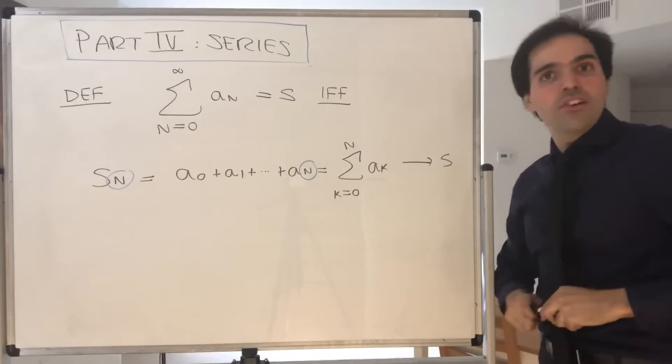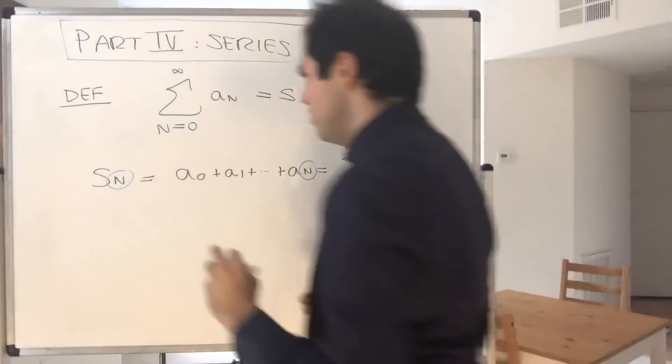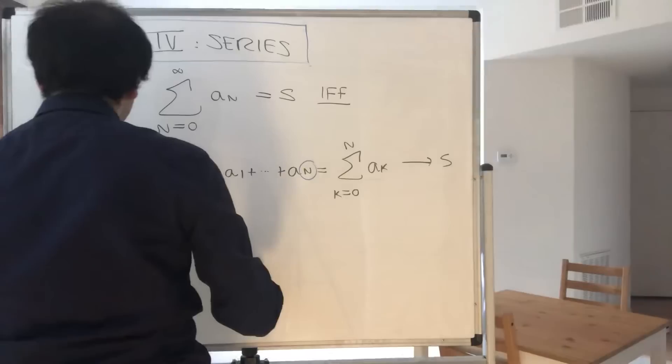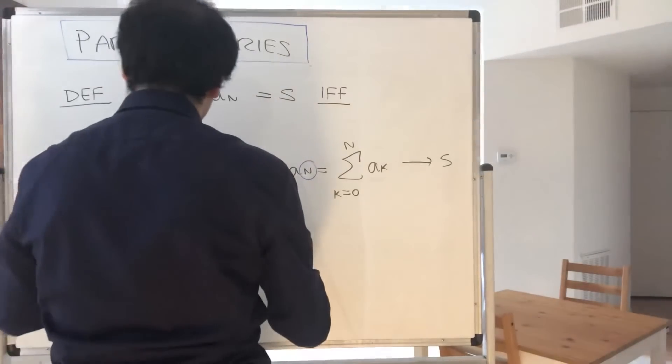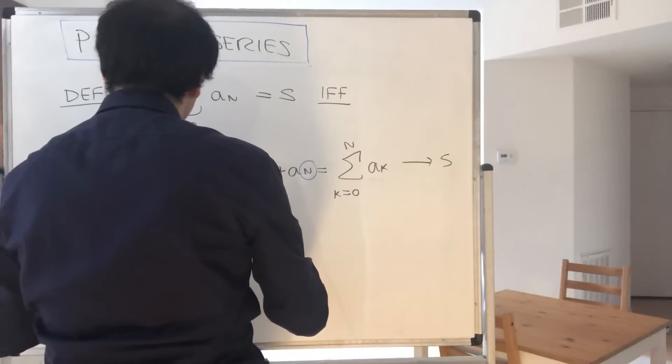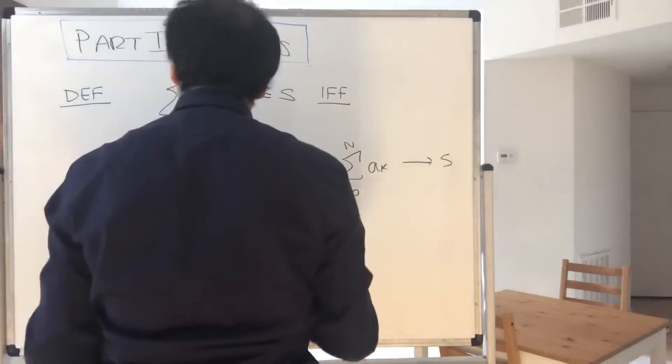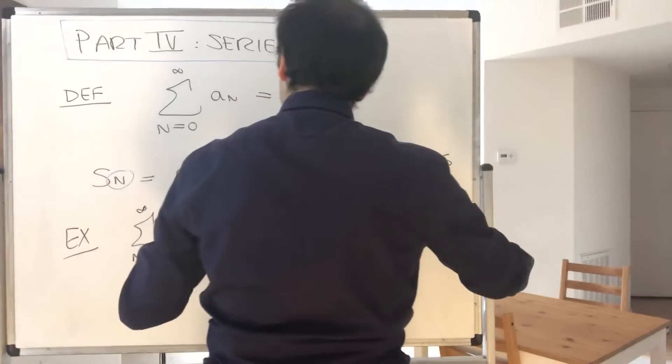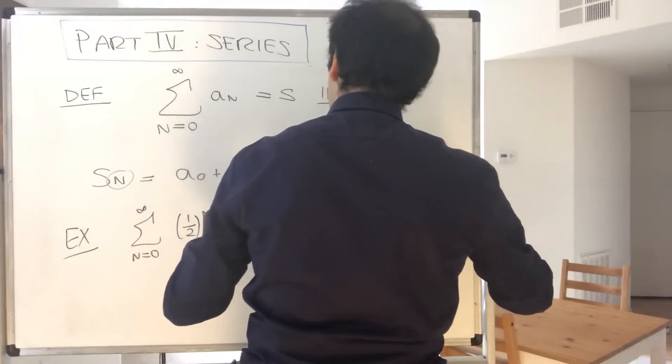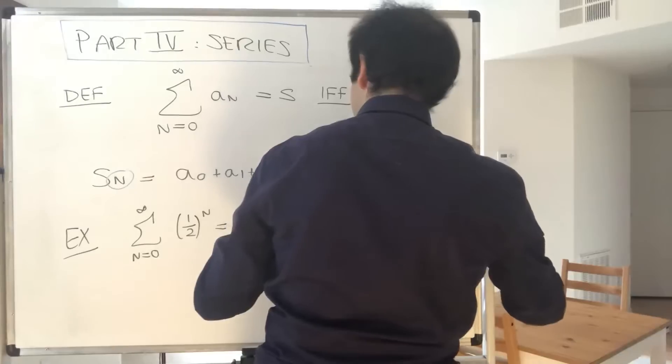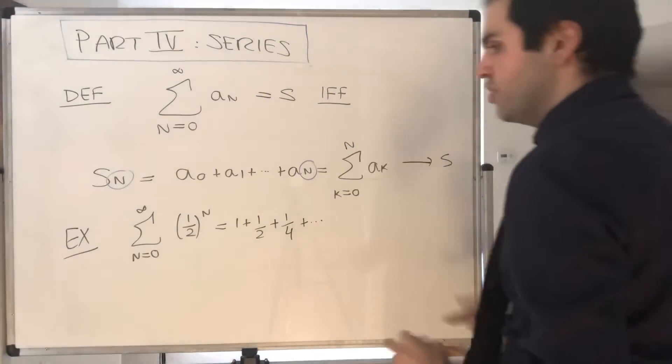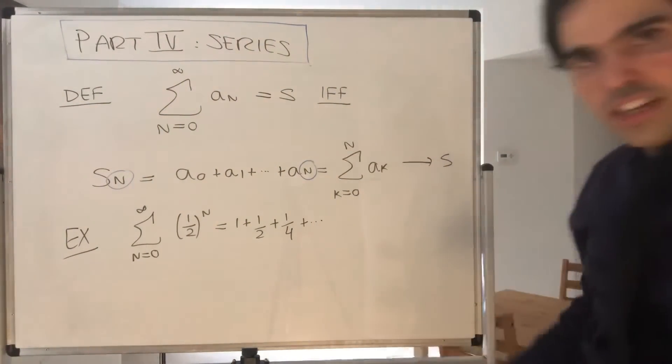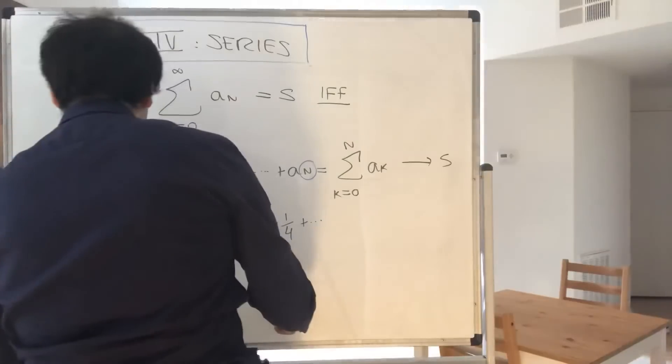And in particular, let me give you an example illustrating this. So, there's this classical geometric series, the sum from n=0 to infinity of (1/2)^n, which is 1 + 1/2 + 1/4 + ... The question is, what is the value of this series? Well, let's look at the partial sums.